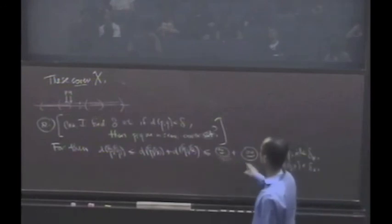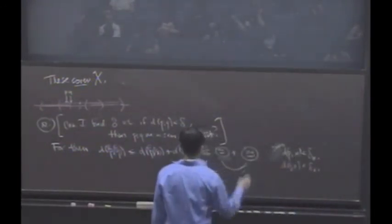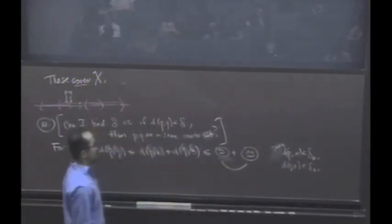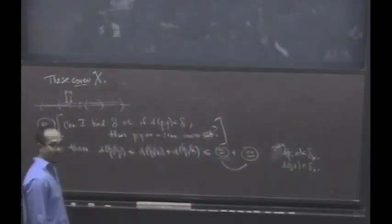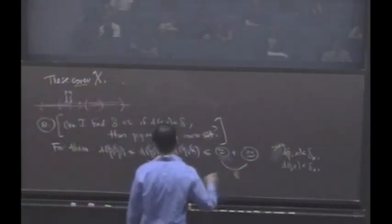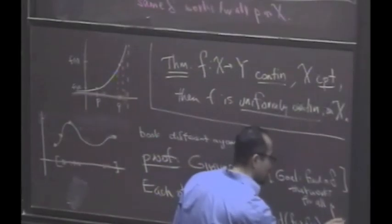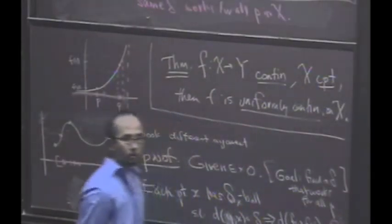And so what do I want if I want this to be less than epsilon? If I want this to be less than epsilon, then I need to make Smiley epsilon over 2. That's the choice I should make here. This really should have been epsilon over 2. Okay?